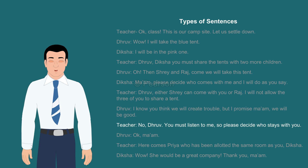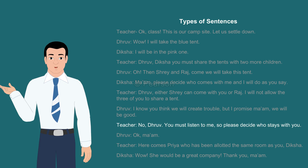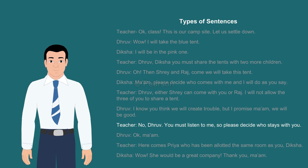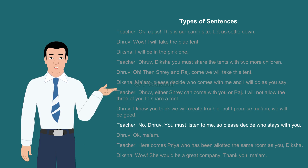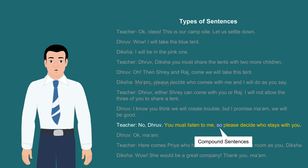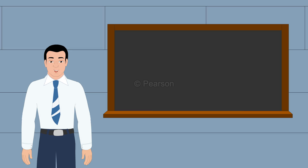Sometimes one sentence acts because of another. We use conjunctions like 'so,' 'therefore,' 'as a result' to join such sentences. Here, the teacher says, 'You must listen to me, so please decide who stays with you.' The third type of sentence is called a complex sentence.